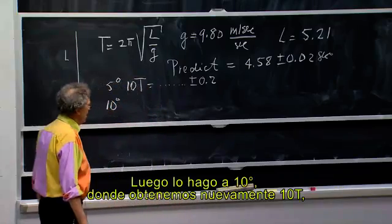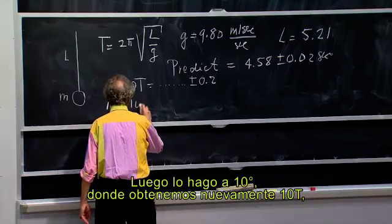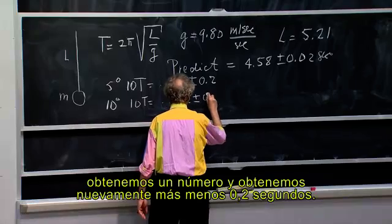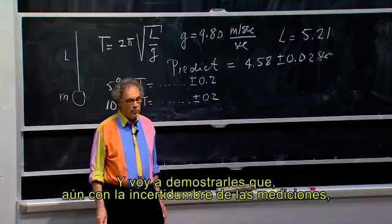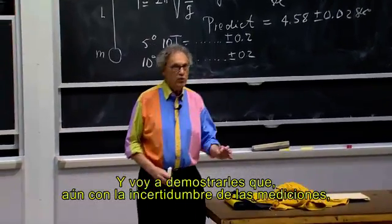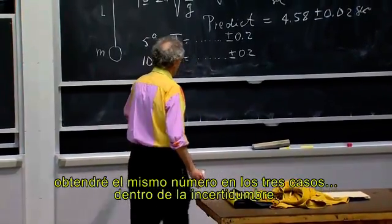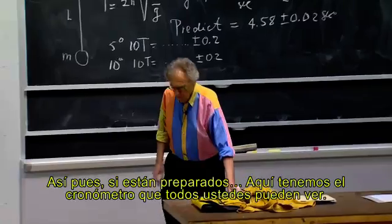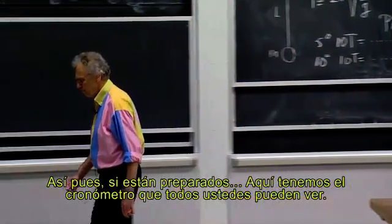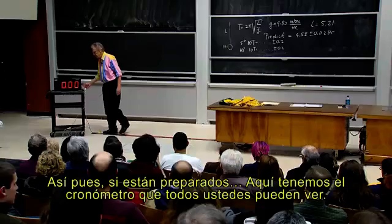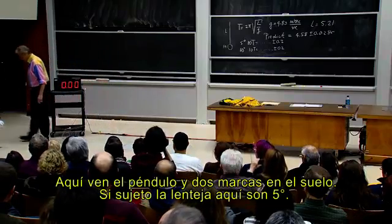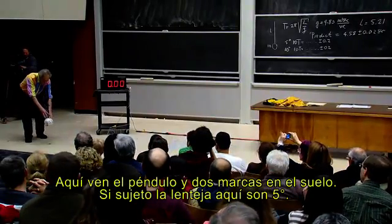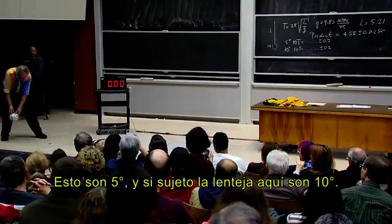I can't change that. So I do it at ten degrees and we get again ten T — a number plus or minus 0.2 seconds. I'm going to demonstrate that within the uncertainty of the measurements I get the same numbers in all three cases. You can see the timer here, and here is the pendulum. I have two marks on the floor. If I hold the bulb here, it is five degrees. When I hold the bulb here, it is ten degrees.